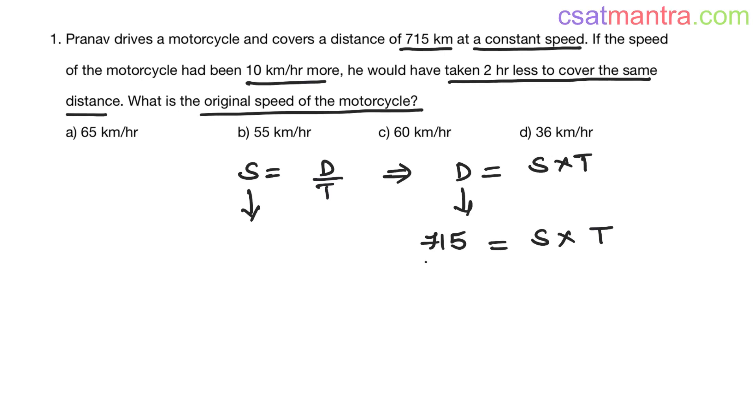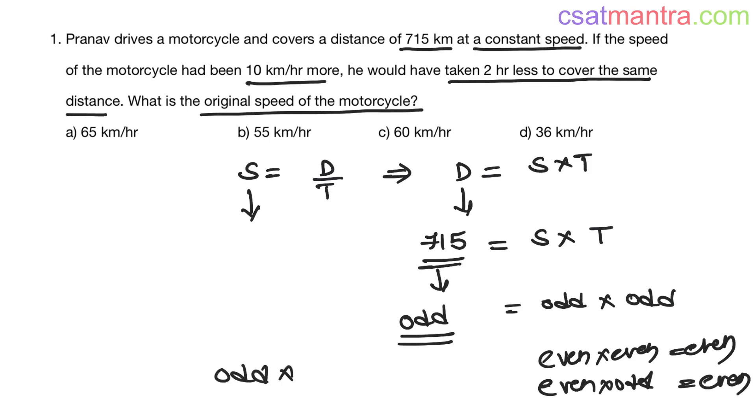Now, if you see, 715 is an odd number. So if your resultant has to be odd number, speed should be odd number and time should be odd number. No one should be even number. Even into even is even, and even into odd is even, but odd into odd equals odd.